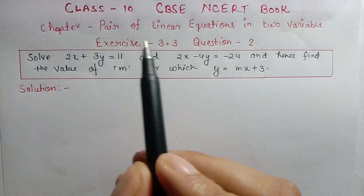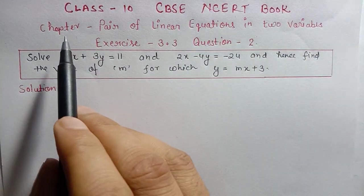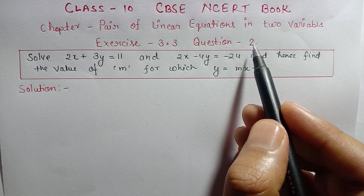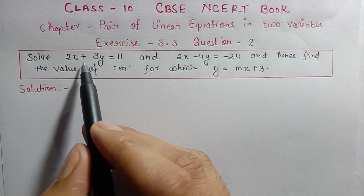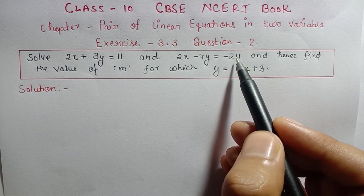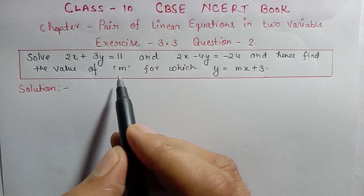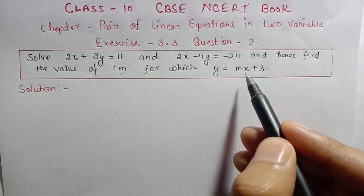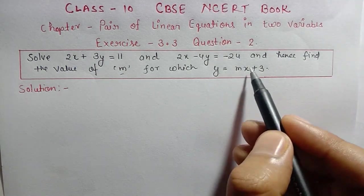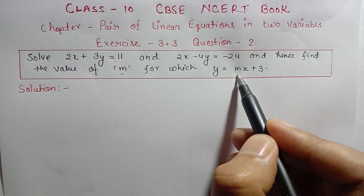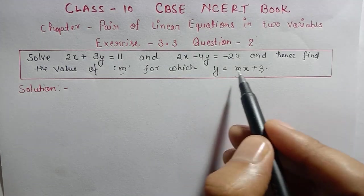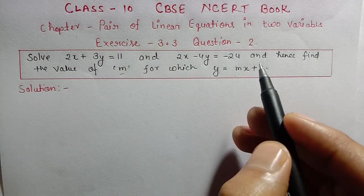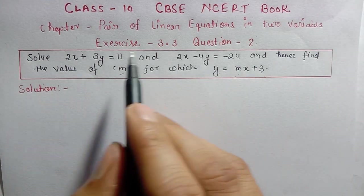Hello students, welcome to my channel. I'm your maths teacher. Today we're solving Class 10 NCERT book Chapter: Pair of Linear Equations in Two Variables, Exercise 3.3, Question 2. Question 2 is: solve 2x + 3y = 11 and 2x - 4y = -24, and hence find the value of m in the equation y = mx + 3. To find the value of m, we'll first solve the two equations for x and y.